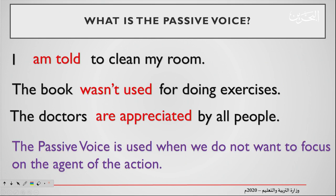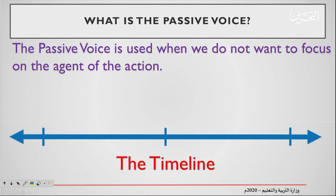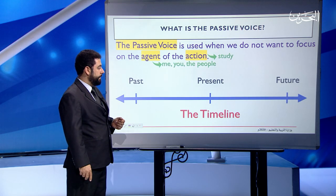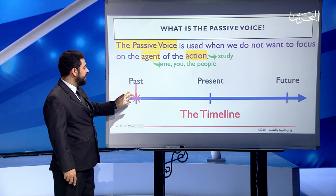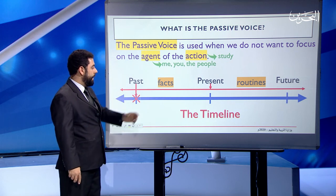Now, the passive voice is used when we do not want to focus on the agent of the action. An agent is people in this sentence. We use the passive voice for something that happened in the past, or something that happens all the time in the present, where facts and routines happen.